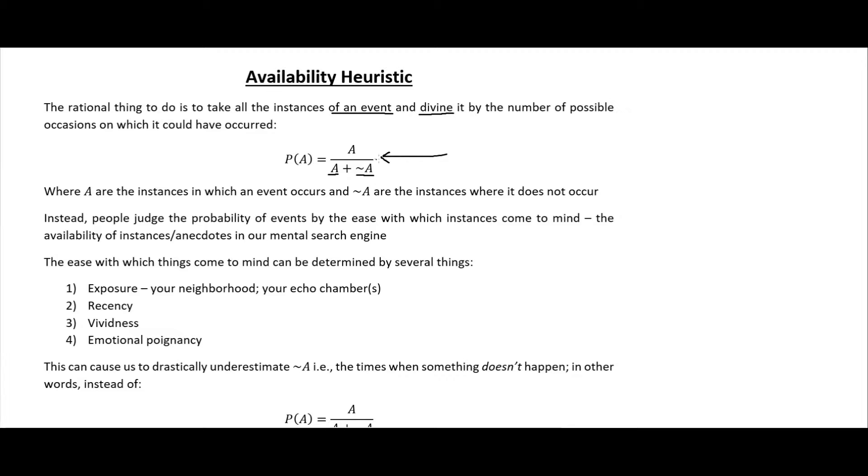The availability heuristic is similar to confirmation bias in the sense that we are underestimating this not-A, the times when something did not occur, or the instances where the event does not occur.